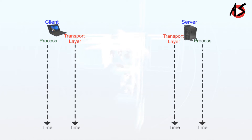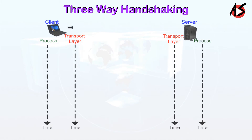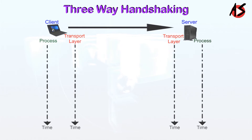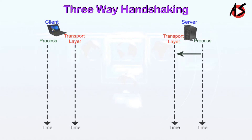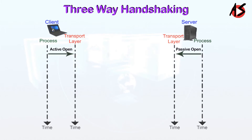The connection establishment in TCP is called three-way handshaking. Here the client wants to make a connection with another application program called the server. The server program tells its TCP that it is ready to accept a connection — this request is called a passive open. When a client program issues a request for an active open, TCP can now start the three-way handshaking process.